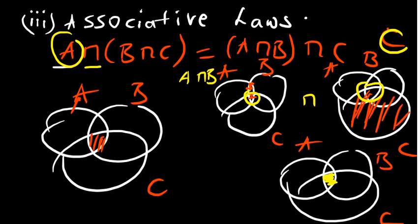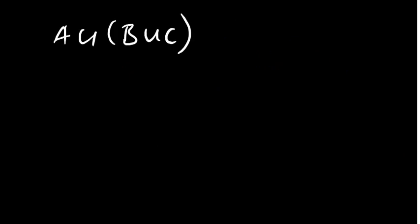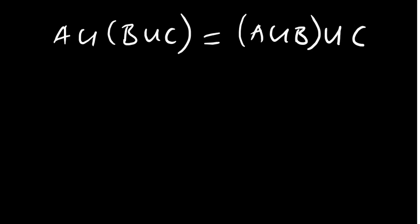Your challenge under associative law is to also look at the union version. Try showing A union B union C, which requires you to first show B union C, then show A union B and combine with C. Both approaches should give the same result.